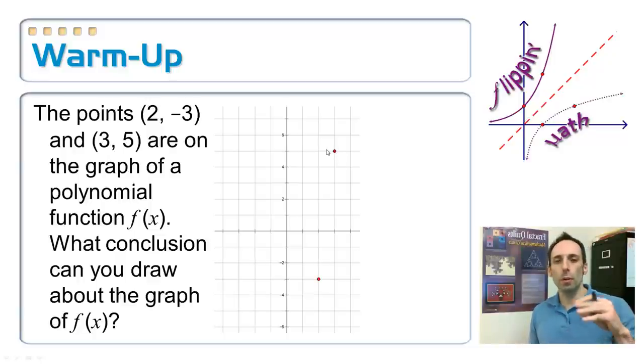If these are two points that are on a polynomial function, then what conclusion can you draw about this graph? It's a polynomial function. Polynomials are continuous. Whenever you draw them, you don't lift up your pencil.